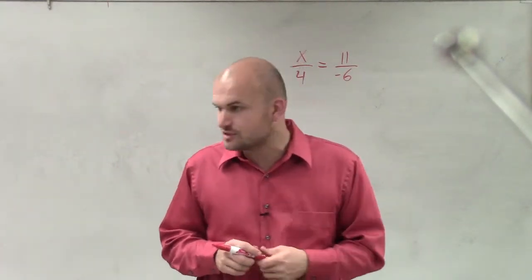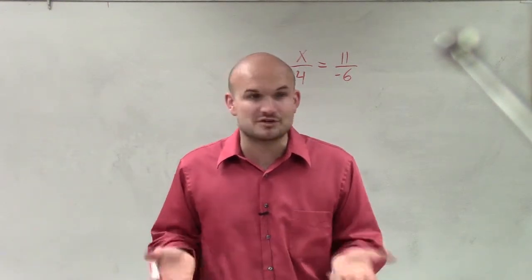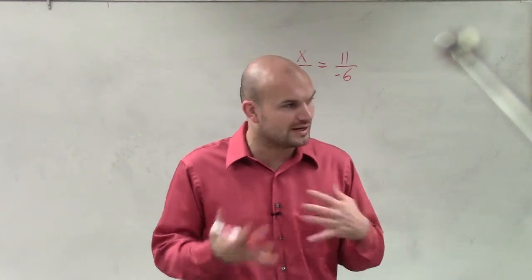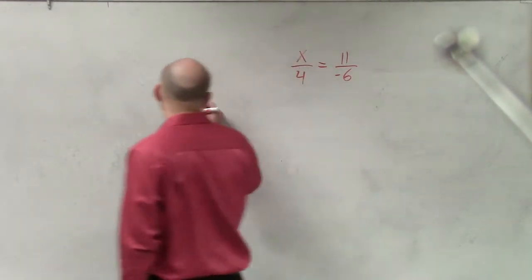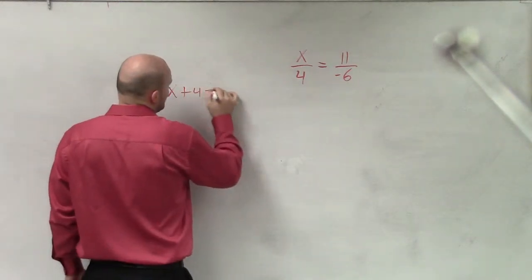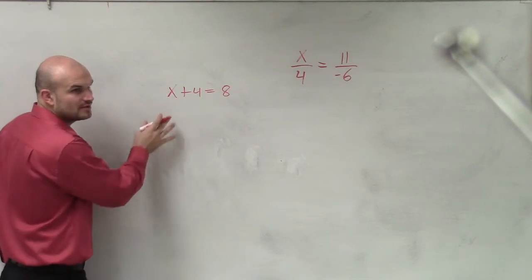But if you guys remember solving linear equations in Algebra 1, remember we talked about inverse operations, doing the undoing of what's happening to your variable. So if you had something like x plus 4 equals 8, what was your inverse operations, Mario? What do you have to do?